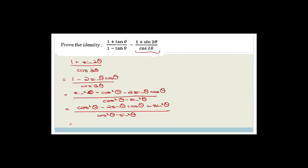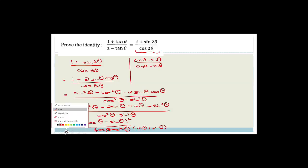Rearranging the numerator with cos squared first: cos squared theta minus 2 sine theta cos theta plus sine squared theta — this is a perfect square trinomial, factoring as (cos theta minus sine theta) squared. The denominator is a difference of two squares: (cos theta minus sine theta)(cos theta plus sine theta). Cancel the common factor, leaving (cos theta minus sine theta) over (cos theta plus sine theta).